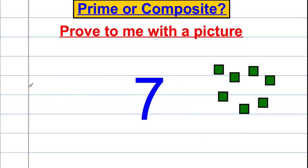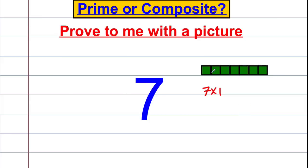Number seven can only be arranged into one rectangle. There are only two whole numbers that multiply to seven, namely one and seven. So seven is a prime number — it's one of the building blocks of other numbers.